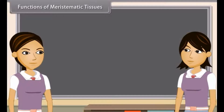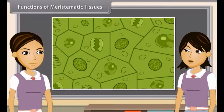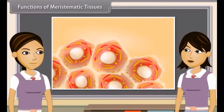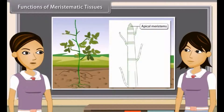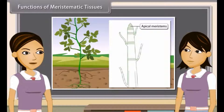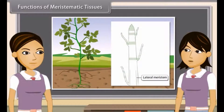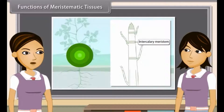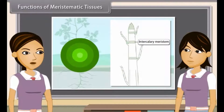The main function of meristematic tissue is the formation of new cells continuously. Apical meristem increases the height of the plant due to elongation of the root and stem — it is also called primary growth. Lateral meristem increases the diameter of the plant — it is also called secondary growth. Intercalary meristem increases the length of the organ.